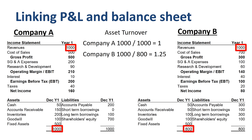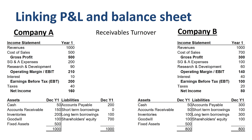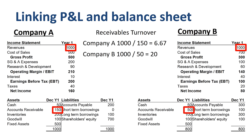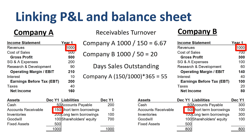Let's dig a little deeper into two key subsets of this asset turnover ratio. The first one is receivables turnover — the number of times per year that the business collects its average accounts receivable, the ratio between revenue in the income statement and accounts receivable on the balance sheet. That's 6.67 for company A and 20 for company B. Receivables turnover might be abstract, so let's turn it into a more tangible metric called days sales outstanding — how many days does a company need to wait before a customer pays? 55 days for company A, and just 18 days for company B.